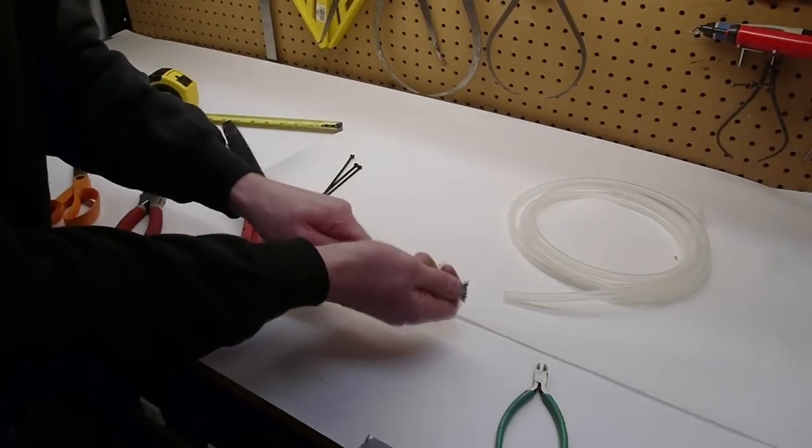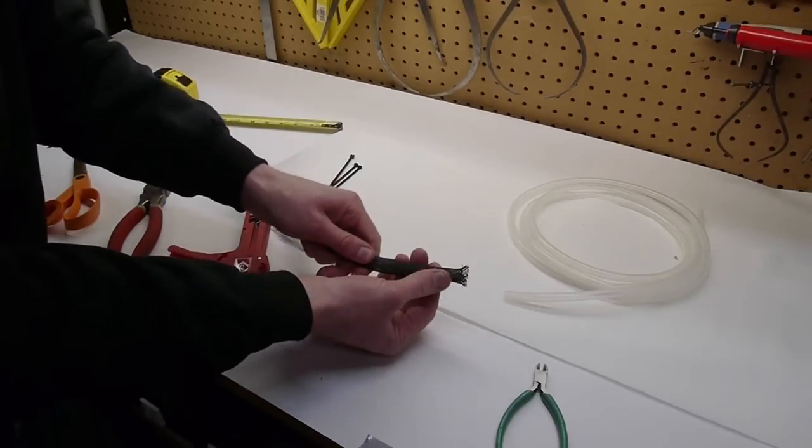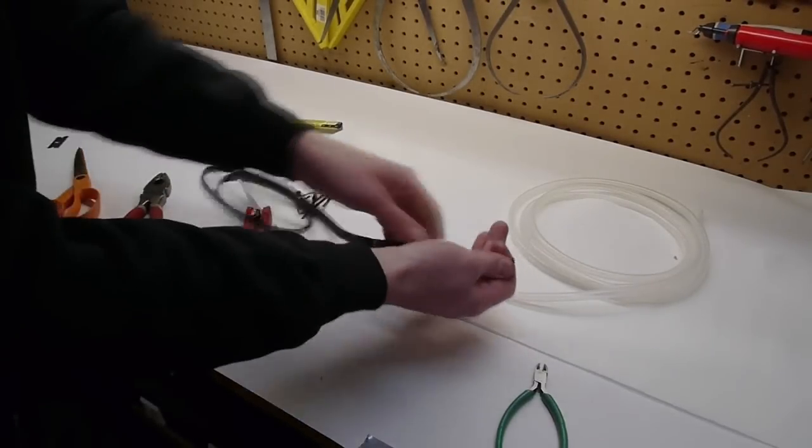I find that it works best to extend past the tube a little bit, like this, and pull everything taut.